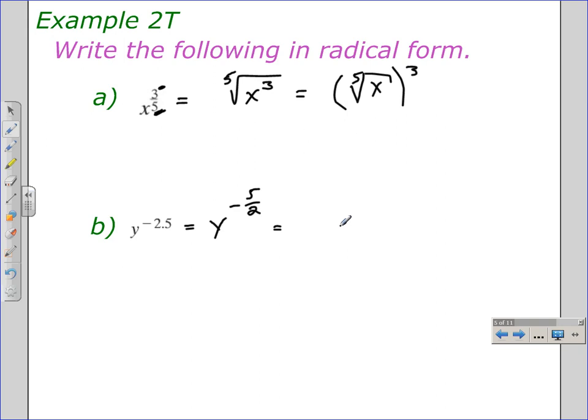And so, putting this into radical form would give us the square root of y to the negative 5 power. Either one of these powers can be negative. One of them has to be negative. So, we'll make one of them negative.